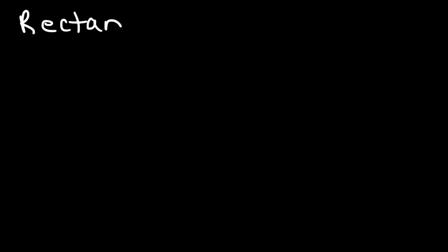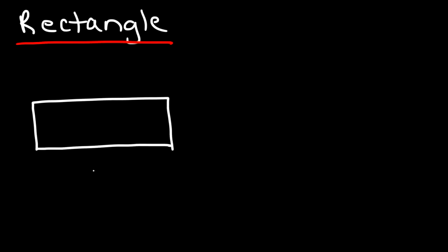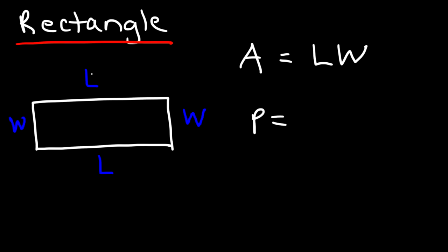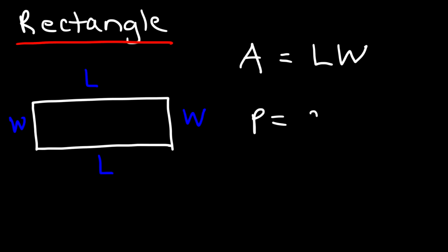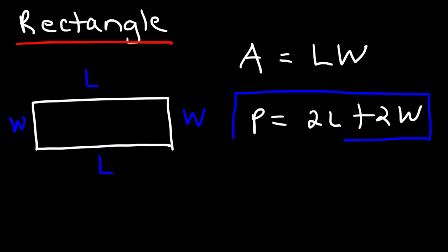The next shape is the rectangle. This is the length and this is the width — the opposite sides are also length and width respectively. The area of a rectangle is length times width. The perimeter is the sum of all four sides, so l plus l is 2l and w plus w is 2w, giving a perimeter of 2l plus 2w.